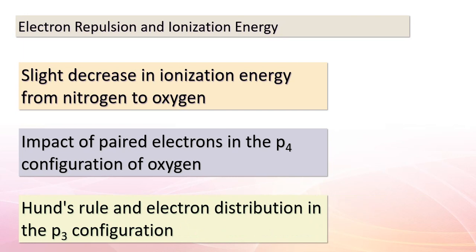In our exploration of periodic trends and ionization energy, let's now shift our focus to another intriguing example. Moving from nitrogen to oxygen, we notice a slight decrease in ionization energy. What's the reason behind this change? It's all about the repulsion of paired electrons within the configuration of oxygen, as highlighted in figure 7.11.